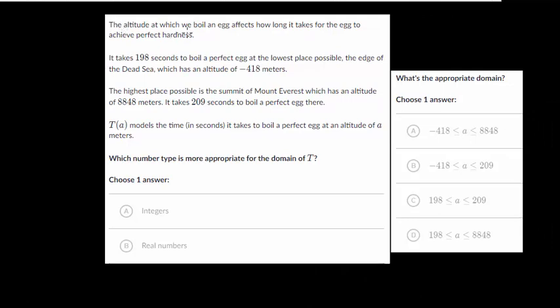we have the altitude at which we boil an egg affects how long it takes for the egg to achieve perfect hardness. It takes 198 seconds to boil a perfect egg at the lowest place possible, the edge of the Dead Sea, which has an altitude of -418 meters. And the highest place possible is the summit of Mount Everest, which has an altitude of 8,848 meters. It takes 209 seconds to boil a perfect egg there. So T(a) models the time in seconds it takes to boil a perfect egg at an altitude of a meters.